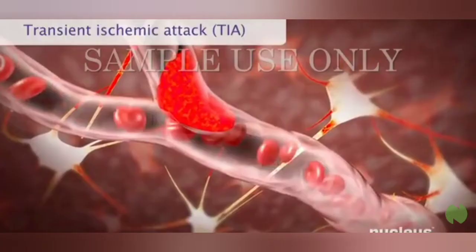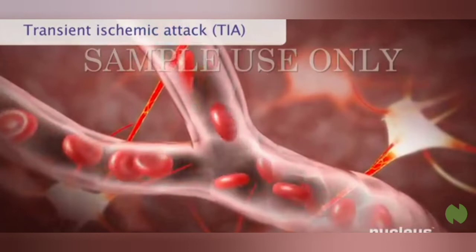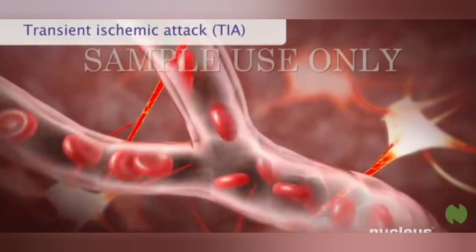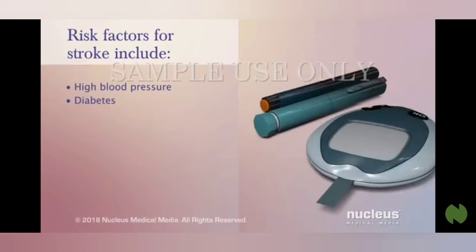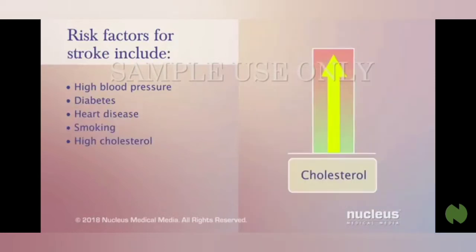In a transient ischemic attack, or TIA, a clot blocks the flow of blood to the brain, but it is different from other types of stroke because the clot breaks up after a short time. Transient ischemic attacks usually don't cause any permanent damage.